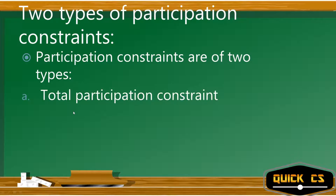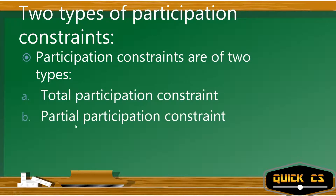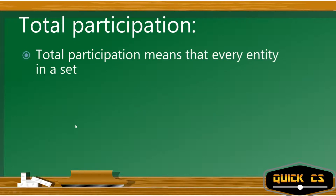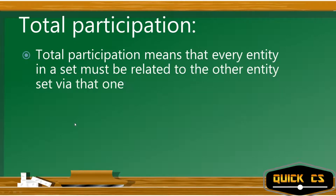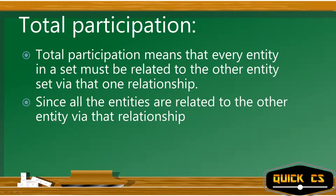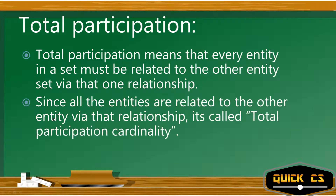Participation constraints are of two types: total participation and partial participation. Total participation means that every entity from an entity set must be related to the other entity set via that relationship. Since all entities participate, it is called total participation cardinality.